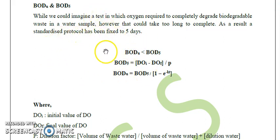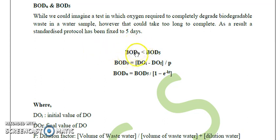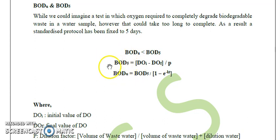BODU refers to the BOD of an unseeded sample which has not been diluted, and may be higher. As a general observation, BODU — the BOD of an unseeded sample — is always higher than the five-day BOD. There is a general formula which has also been mentioned in the standard reference book by Gilbert M. Master.